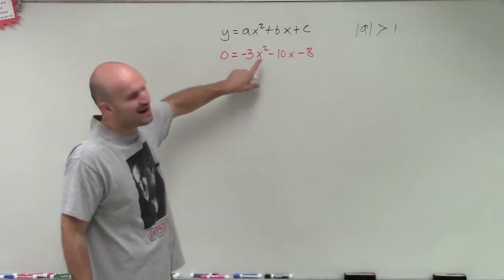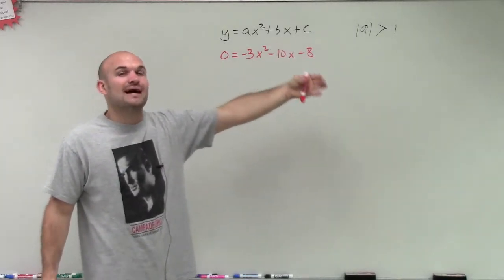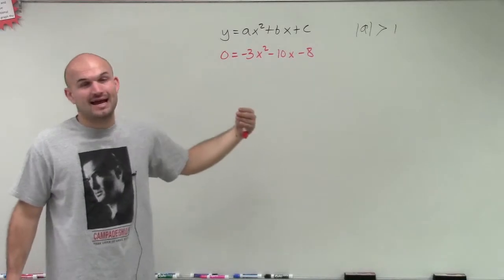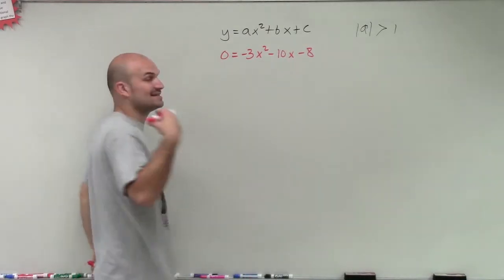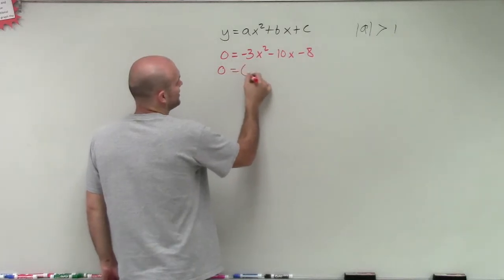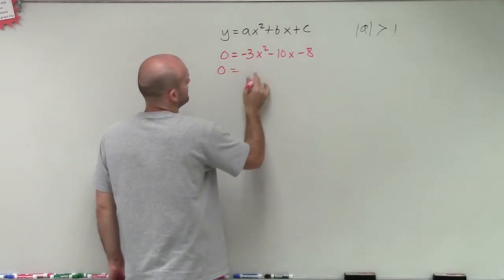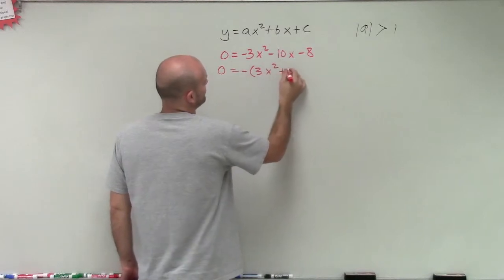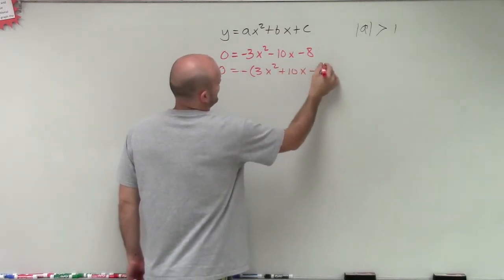The first thing I notice, whenever I have my A as negative, when I'm going to apply this technique, I like to factor out that A. It just helps me visualize, and it's not going to change my answer. So the first thing I'm going to do is I'm going to factor out the negative. Therefore, I'm just going to be left with 3x squared plus 10x minus 8.